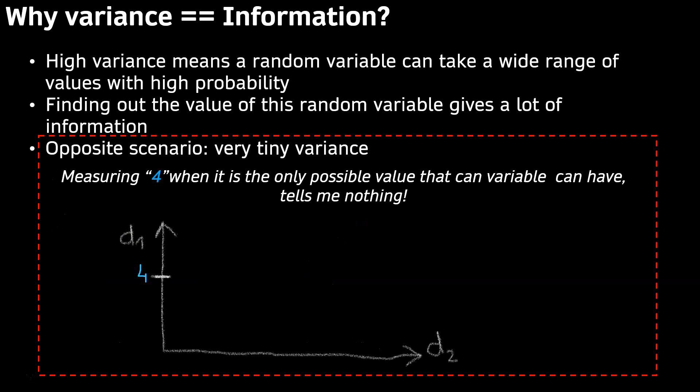Opposite scenario: very tiny variance or even zero variance is like measuring number 4 when it's the only possible value that variable can have. It tells me nothing.